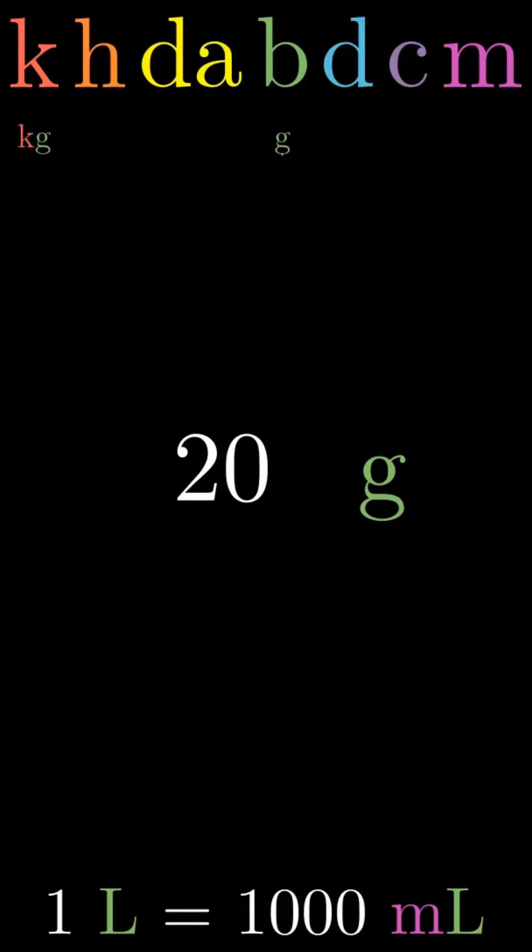If I have 20 grams and I want that in kilograms, I move the decimal three places to the left. So 20 grams is 0.02 kilograms.